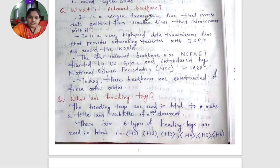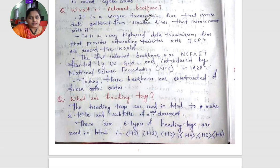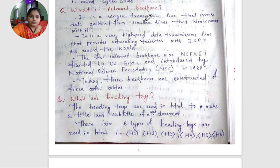It is a very high speed data transmission line that provides networking facilities with ISPs — internet service providers — all around the world.